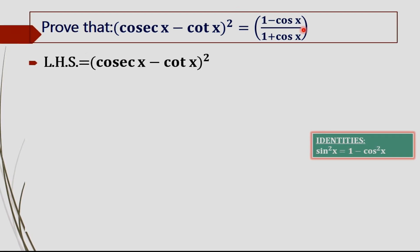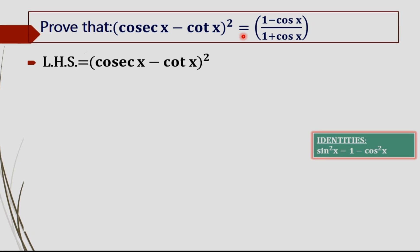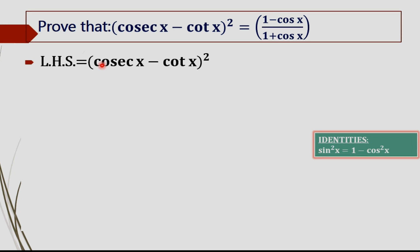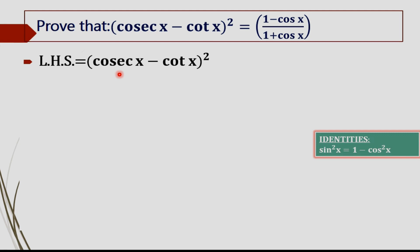The RHS is 1 minus cos x, whole divided by 1 plus cos x. In order to transform the LHS into that form, we are going to change each term — that is cosec x and cot x — in terms of sine x and cos x.